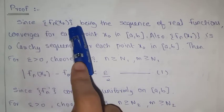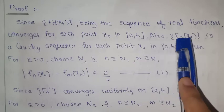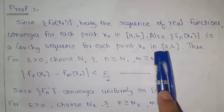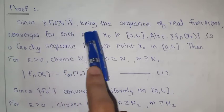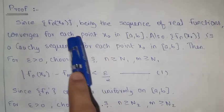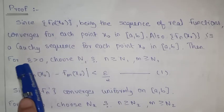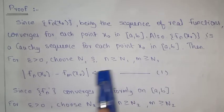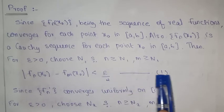In the proof: since fn(x0) is a sequence of real functions converging for each point x0 in [a, b], the sequence fn(x0) is a Cauchy sequence at each point x0 in [a, b]. Since every convergent sequence is a Cauchy sequence, for ε > 0, choose N1 such that for n > N1, m > N1: |fn(x0) - fm(x0)| < ε/2.